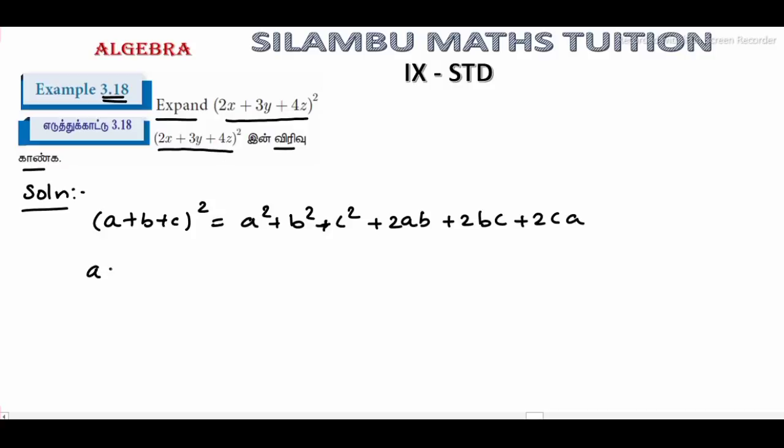From the question, a is equal to 2x, b is equal to 3y, c is equal to 4z. Anyway, in the 2x plus 3y plus 4z the whole square.